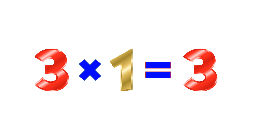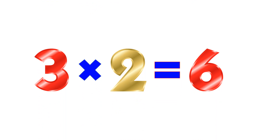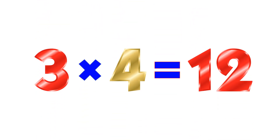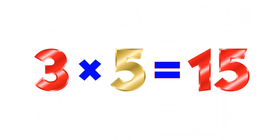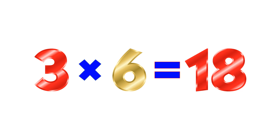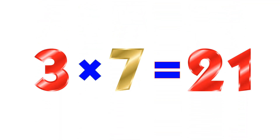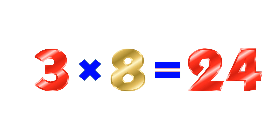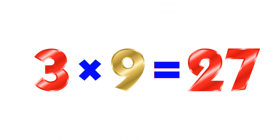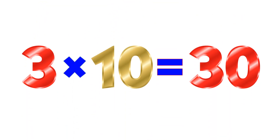Table of 3. 3×1=3. 3×2=6. 3×3=9. 3×4=12. 3×5=15. 3×6=18. 3×7=21. 3×8=24. 3×9=27. 3×10=30.